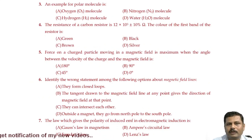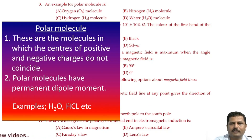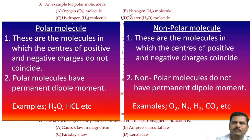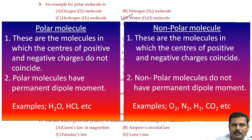An example for a polar molecule. A polar molecule is one in which the centers of positive and negative charges do not coincide. Examples are H₂O and HCl. Water is the correct answer — option D — because it is a polar molecule. Non-polar molecules are those in which the centers of positive and negative charges coincide; examples are O₂, N₂, H₂, and CO₂. So options A, B, C are non-polar molecules whereas D is the polar molecule. Our answer is D.